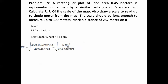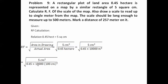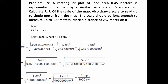Since the numerator's unit is cm² and the denominator's unit is hectare, we need to convert hectare into cm². One hectare equals 10,000 m², and one meter equals 100 cm, so we substitute 100 cm for each meter and square it. Opening the bracket gives us 10,000 × (100)² cm², and after cancellation the RF works out as 1/3000 — a unitless quantity.